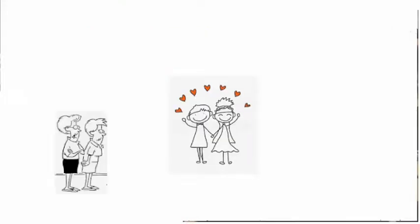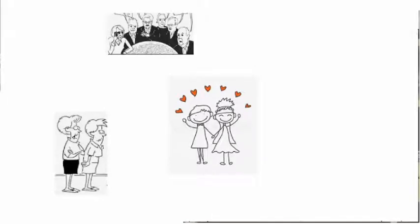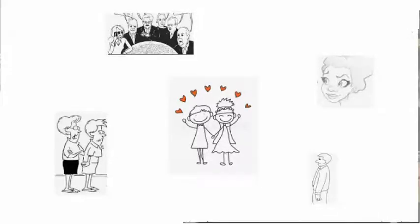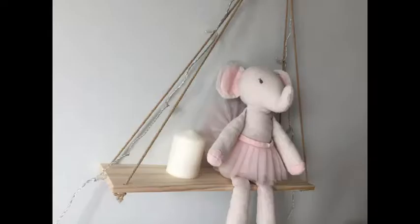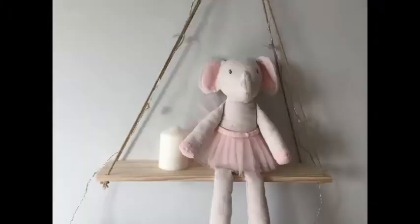Statements from family and friends that say how long they have known you, and how they spent time with you as a couple socially, are also evidence of social aspects. You should provide at least two statements from family, friends, colleagues, or neighbours — or whoever is willing to provide a statement as a supporting witness. If you can provide more than two statements, that is even better. You are most welcome to provide more than two statements from more supporting witnesses.